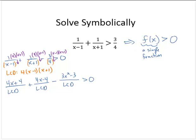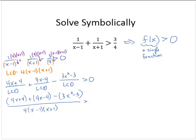So now we have 4x plus 4 plus 4x minus 4 minus quantity 3x squared minus 3, all over—and now I'll write out the common denominator, 4 by x minus 1 by x plus 1. And that's still greater than, just greater than 0.